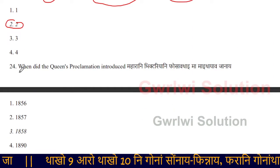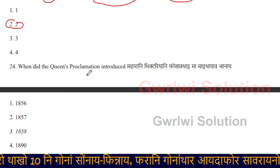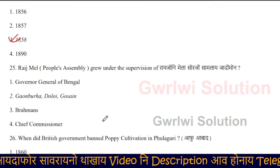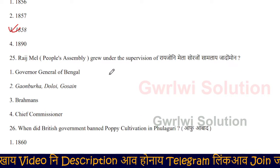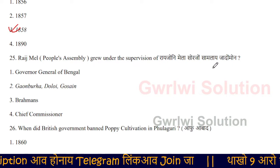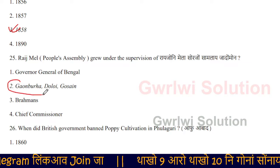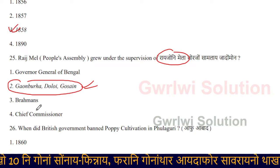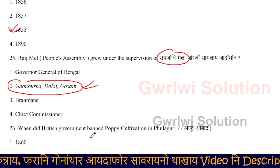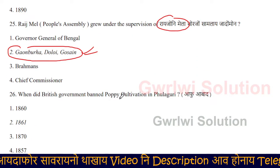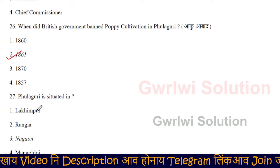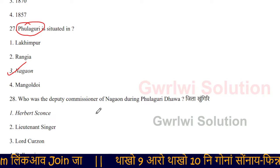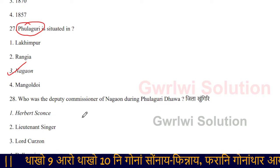When did the Queen's Proclamation introduce Mohara's victory? In 1858, Mohara's victory push-out. The RISE male people's assembly grew under the supervision of the RISE male. When did the British government ban poppy cultivation in Pulkuri? In 1861, Pulkuri was the deputy commissioner of knockout during Pulkuri.